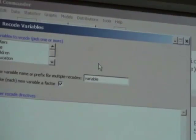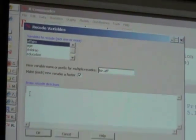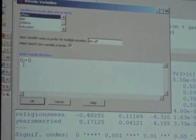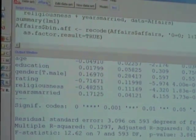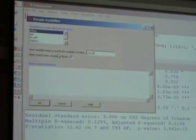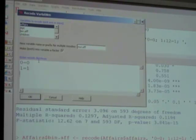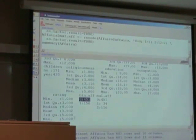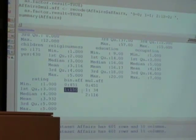I want to recode a variable. I take affairs and I call it bin.aff. And I say if it's zero, let's keep it as zero. If it's one to twelve, let's call it one. 451 individuals said that they did not have an affair and 151 said they had an affair.